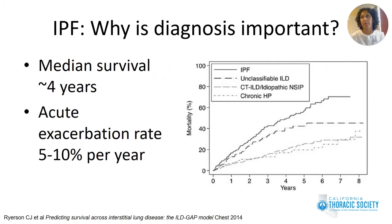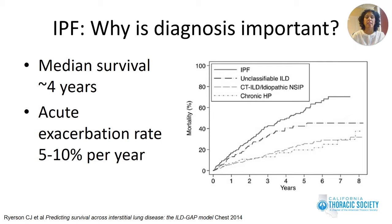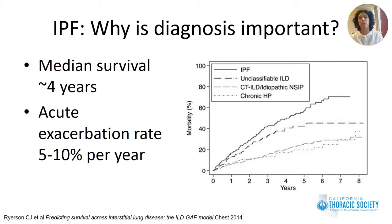Why is the diagnosis of IPF so important? Patients with IPF have a much worse prognosis compared to patients with other types of ILD. In terms of counseling patients and thinking about therapeutic options, it's important to understand which group of ILDs a patient falls into. Additionally, patients with IPF are at increased risk of acute exacerbations. Categorizing patients correctly is critical for both therapeutic and prognostic reasons.